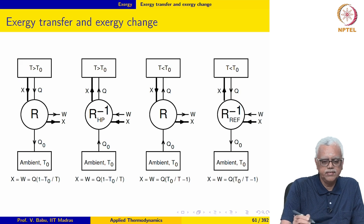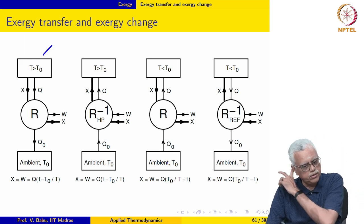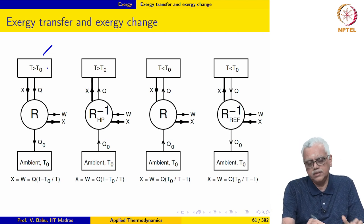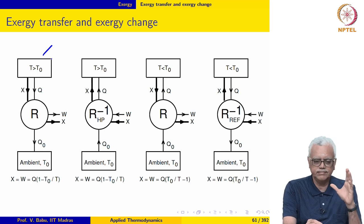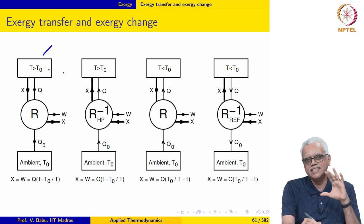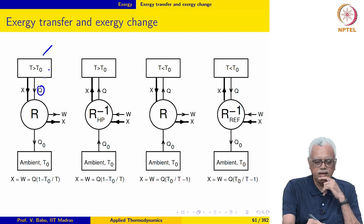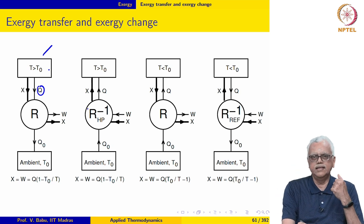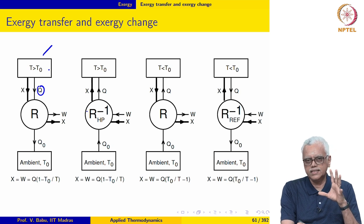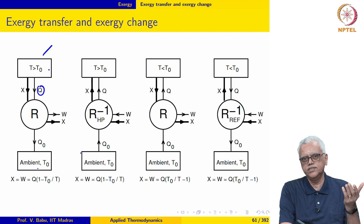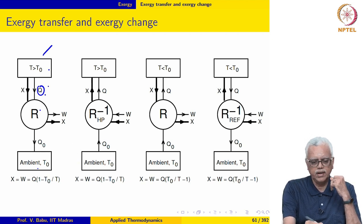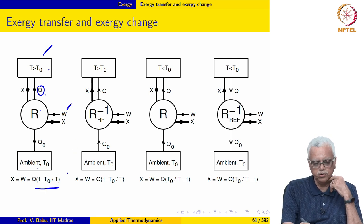Let us say we have a system at a temperature T greater than T₀. Suppose this system supplies a certain amount of heat Q to some other device or system. We want to understand what the corresponding exergy transfer is. To understand this, we envisage a reversible engine that operates between the system at temperature greater than T₀ and the ambient at T₀. Since this reversible engine is supplied with an amount of heat Q, it produces an amount of work W equal to Q times (1 minus T₀ over T).